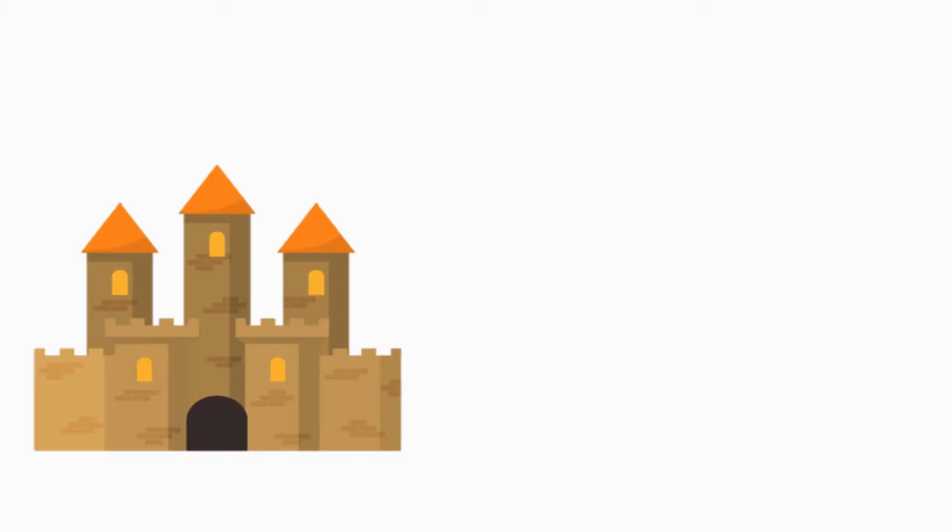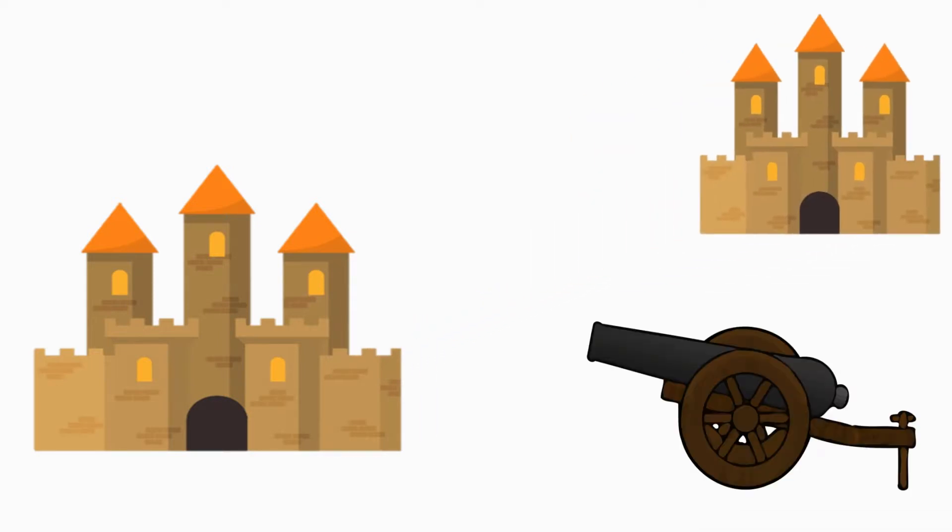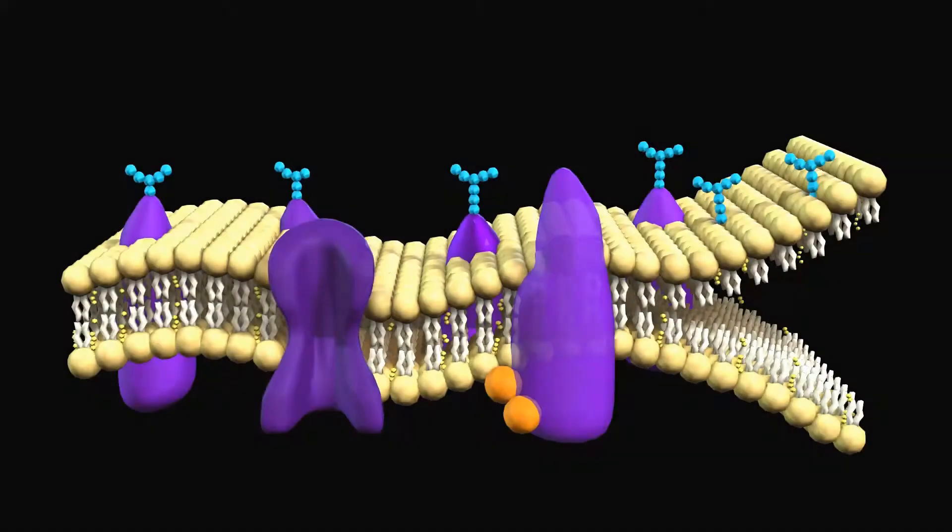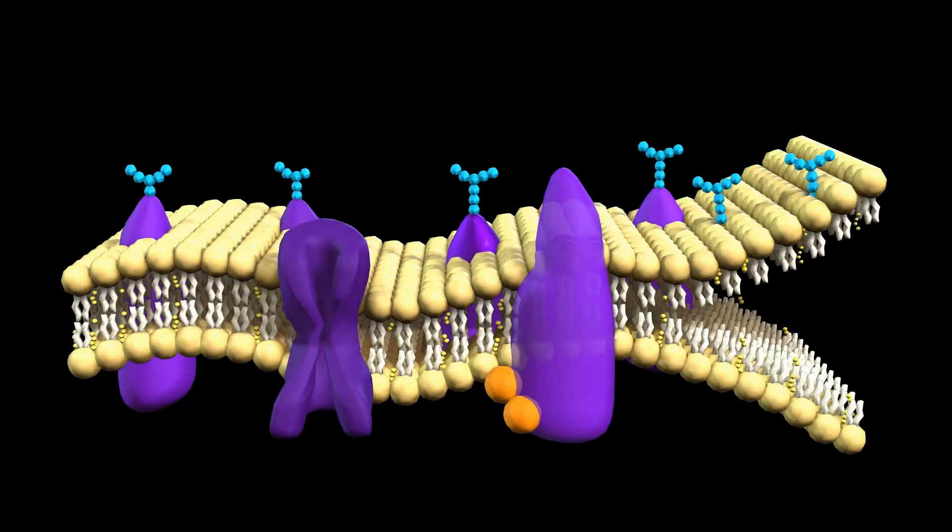The plasma membrane is the wall that provides structure for the buildings inside. The wall regulates which people leave and enter the castle and conveys messages to and from neighboring castles. Just as a hole in the wall can be a disaster for a castle, a rupture in the plasma membrane causes the cell to lyse and die.